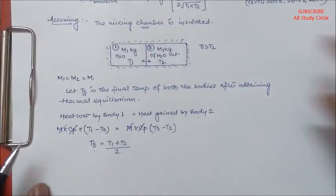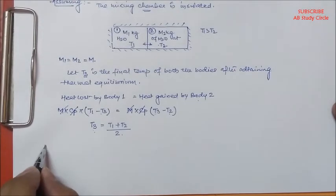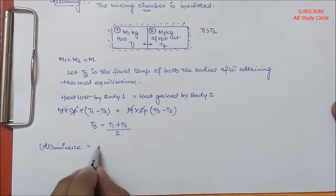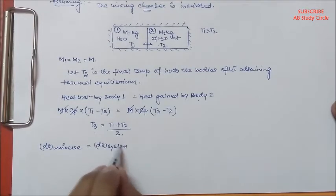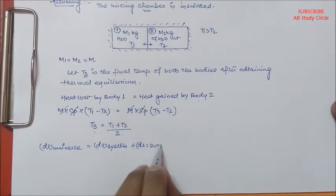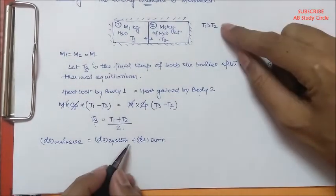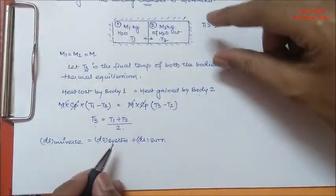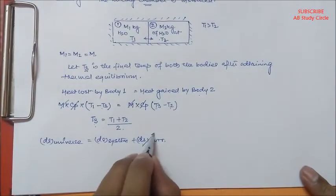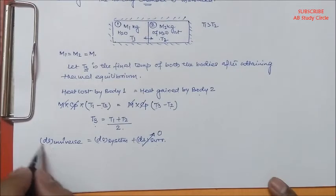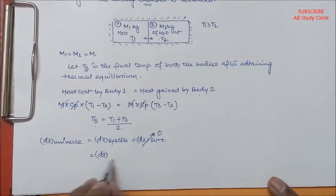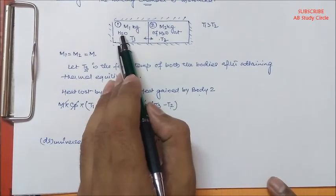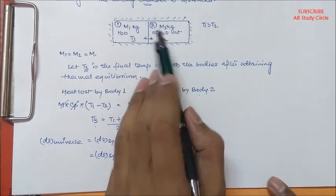Now, as the mixing chamber is insulated, DS universe equals DS system plus DS surrounding. There is no heat interaction between the system and surrounding because the mixing chamber is insulated, so DS surrounding equals zero. That means DS universe is nothing but DS system, which is the algebraic sum of the entropy change for body 1 and entropy change for body 2.